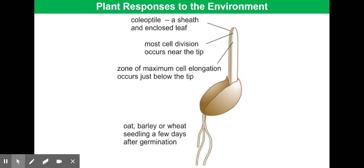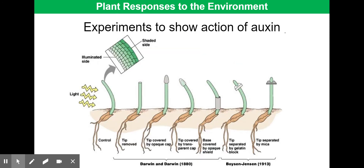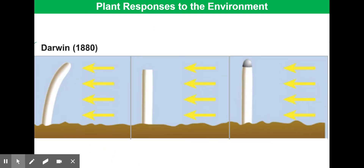As well as understanding the impact of auxin, you also need to be familiar with key experiments that helped us learn more about it. Many experiments were done on coleoptiles — the image here simply shows a coleoptile. We'll begin with the experiments done by Darwin in 1880. His first image shows the initial observation: a coleoptile bending in the direction of light.